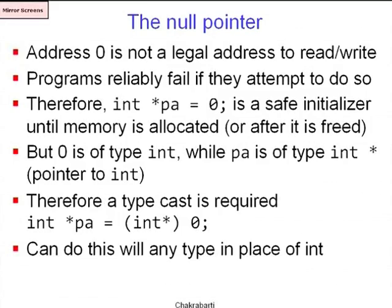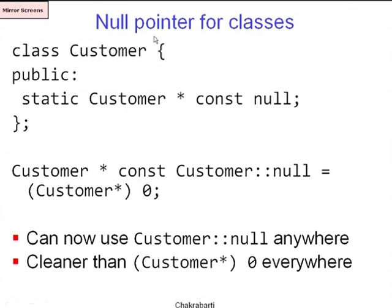One important thing to note is the so-called null pointer. The address 0 is not legal and is often used to denote an illegal pointer value. You can have an `int* PA` which is actually 0, but the compiler will complain because 0 is an integer and not a pointer, so you can cast it to `int*`. When doing this for classes it is customary to declare a static member called null — a static member is shared across all instances of that class — and declare null equal to the pointer 0 cast to the appropriate class pointer type.